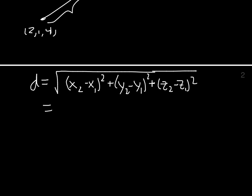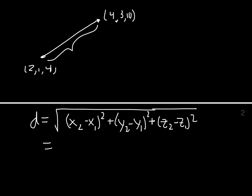Our two points are (2,1,4) and (4,3,10). Subtracting the x's: 4 minus 2. Subtracting the y's: 3 minus 1.